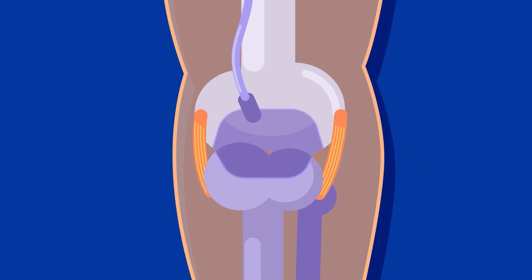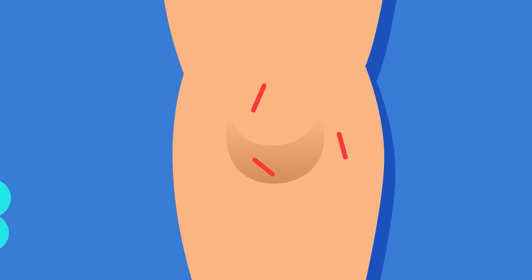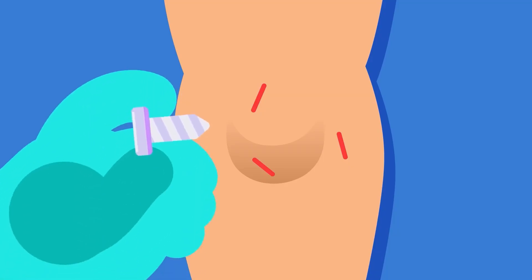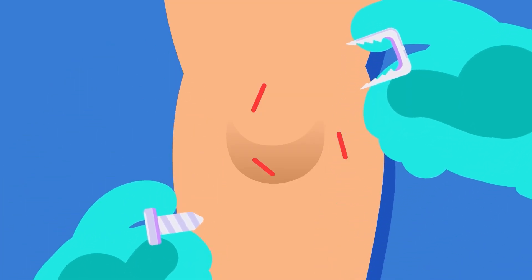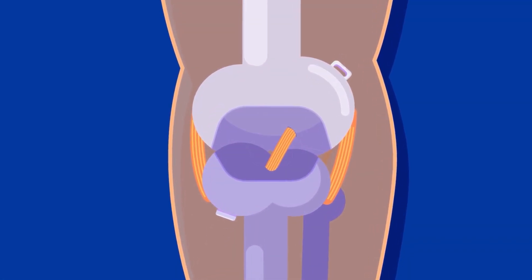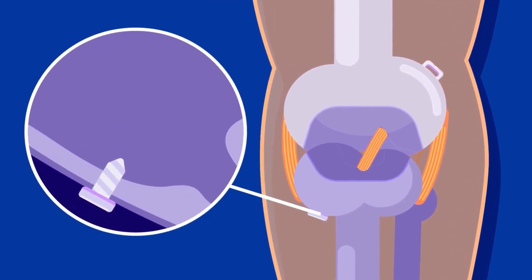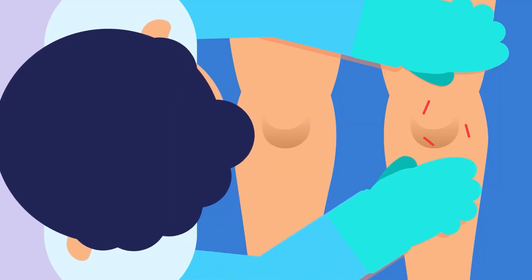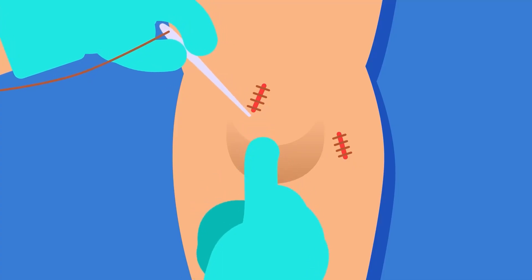Using a special drill, bone tunnels are made in the thigh bone and shin bone to place and hold both ends of the graft. The sutures for the graft are tied to a long pin to be passed through the shin bone tunnel to the thigh bone tunnel. After attaching the graft, the surgeon pulls the suture and places the graft into position right where the old ACL was. Interference screws, spiked washers, or staples are used to secure the ends of the graft. As the screws and sutures are biocompatible, they are absorbed by the bone, eliminating the need for removal surgery. The surgeon then probes the graft to ensure good tension and tests stability using the Lachman test before closing the skin and applying dressing.